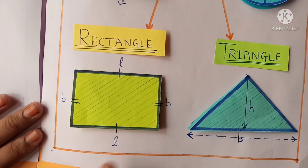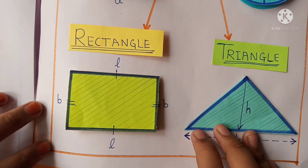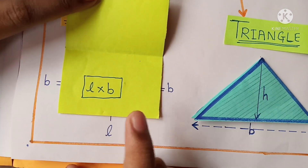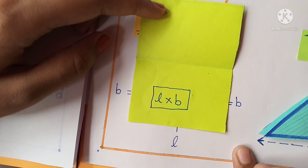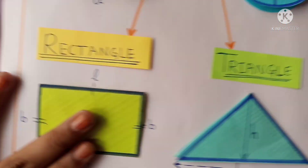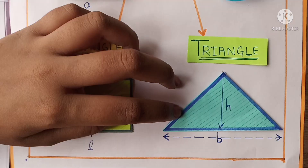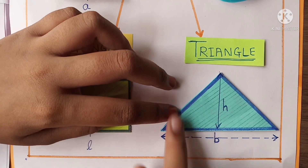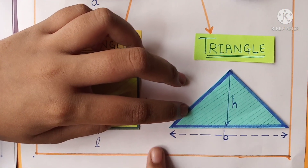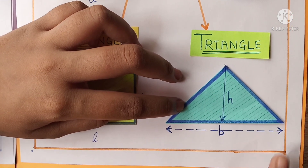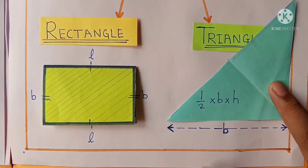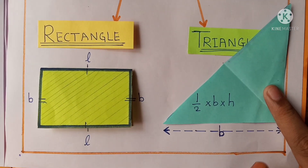Area of rectangle — this is the area of rectangle. Let's see its formula. L into b, means length into breadth. Let's see about triangle. Here is the area of triangle. This is the height of triangle and this is the base of triangle. The formula is half into base into height.